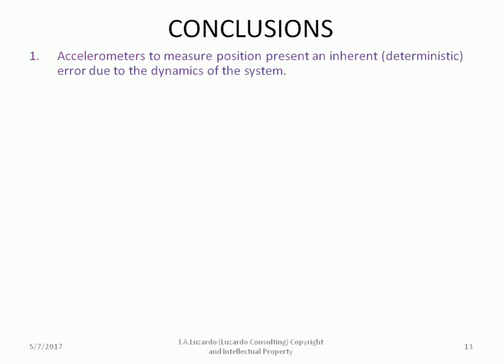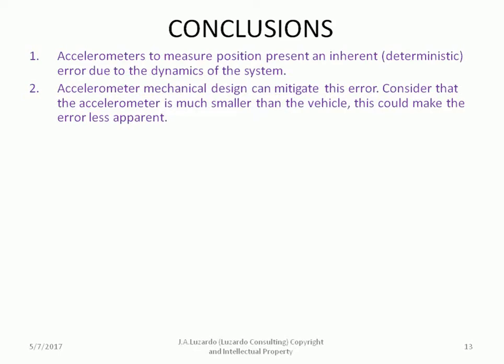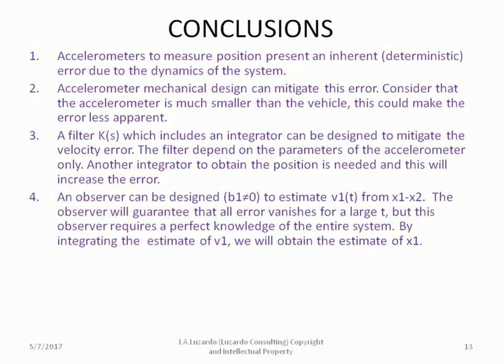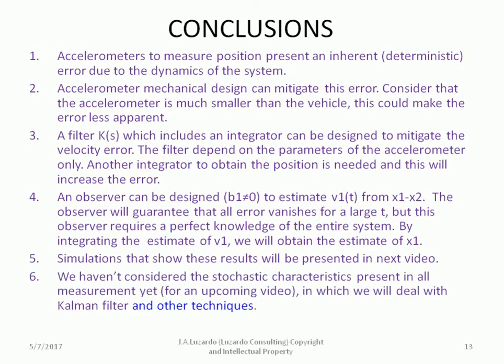Accelerometers to measure position present an inherent, deterministic error due to the dynamics of the system. Accelerometer mechanical design can mitigate this error. Consider that the accelerometer is much smaller than the vehicle. This could make the error less apparent. A filter K(s), which includes an integrator can be designed to mitigate the velocity error. The filter depend on the parameters of the accelerometer only. Another integrator to obtain the position is needed and this will increase the error. An observer can be designed to estimate V1 from X1 minus X2. The observer will guarantee that all error vanishes for a large t, but this observer requires a perfect knowledge of the entire system. By integrating the estimate of V1, we will obtain the estimate of X1. Simulations that show these results will be presented in a next video. We haven't considered the stochastic characteristics present in all measurement yet, for an upcoming video, in which we will deal with Kalman filter and other techniques. Thank you for watching this video. I'll see you soon in our next video.